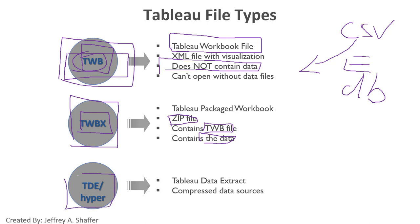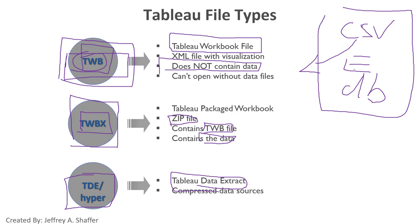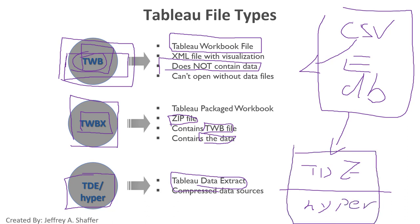The TDE or Hyper file is a Tableau data extract format. When you have data that is not in the Tableau data format, you can extract it into TDE or Hyper format. Hyper is the newer type and is optimized for Tableau, so Tableau can read data in those formats faster and more efficiently than from CSV or Excel files. TDE and Hyper are simply data extract formats in Tableau.